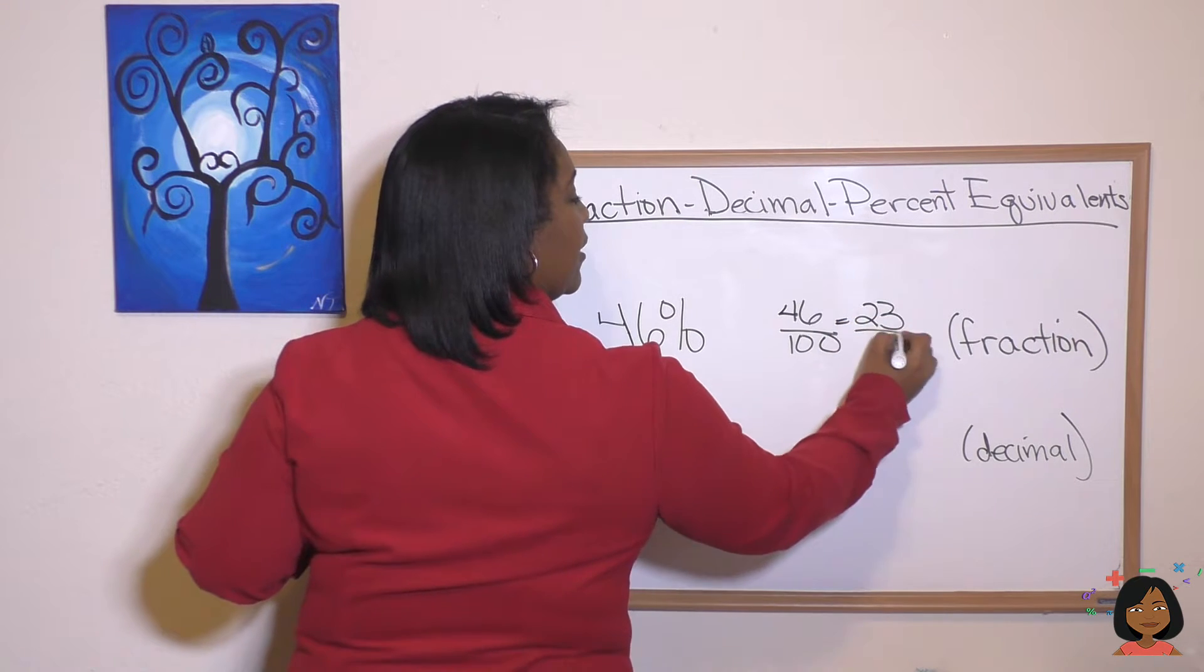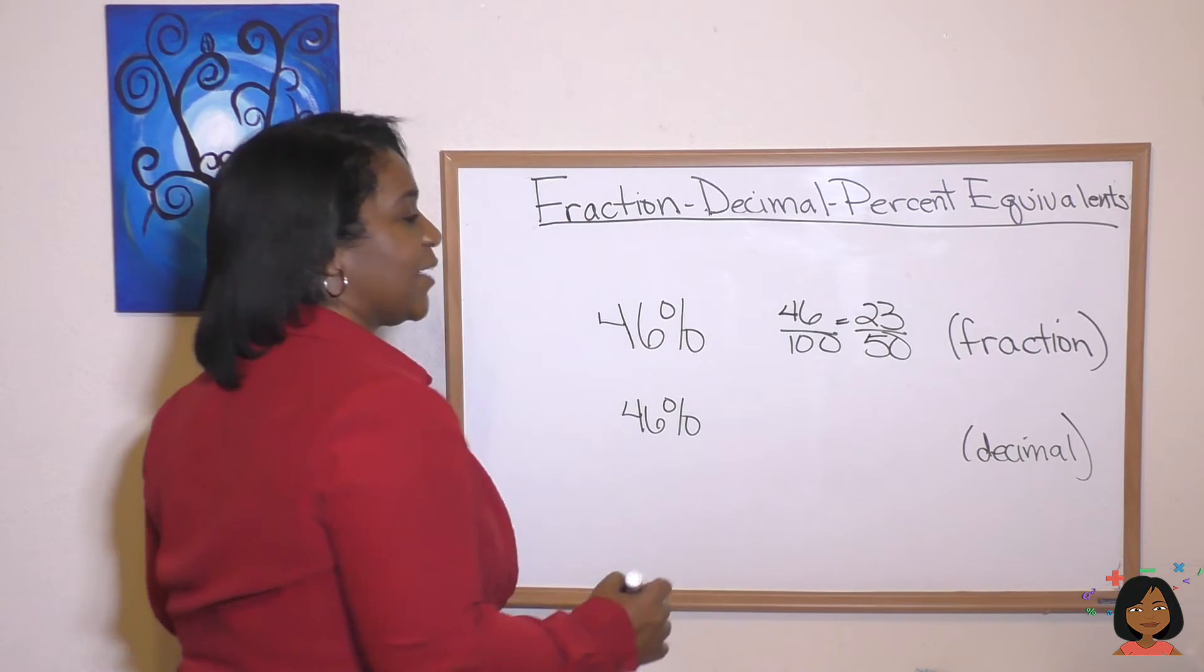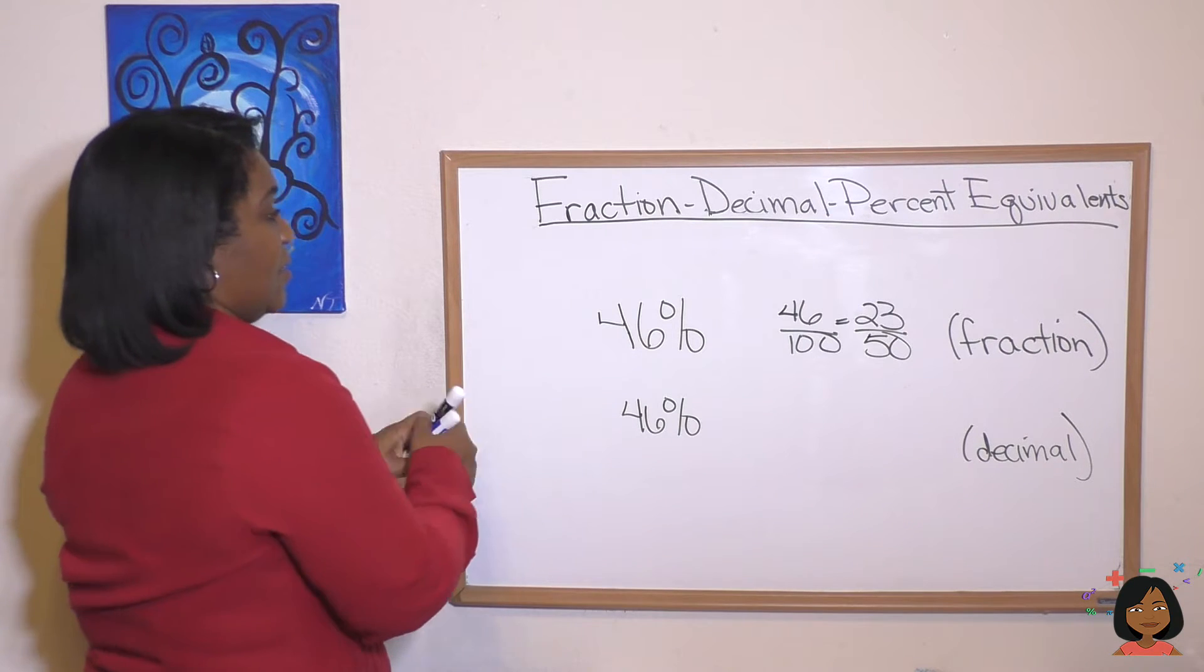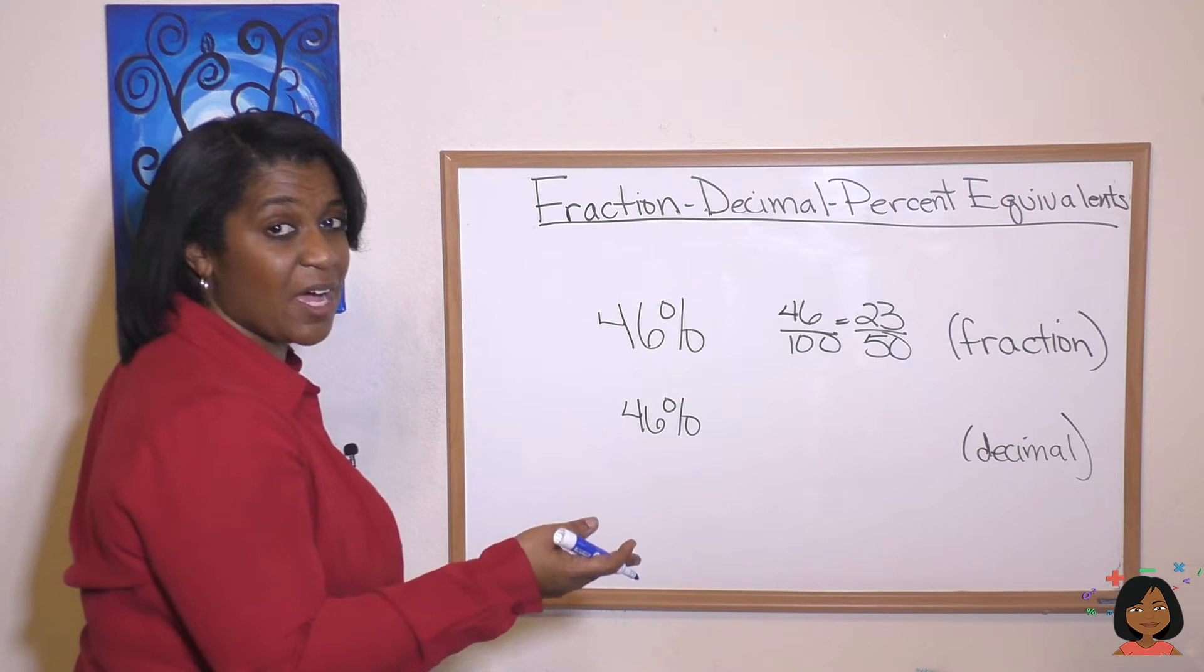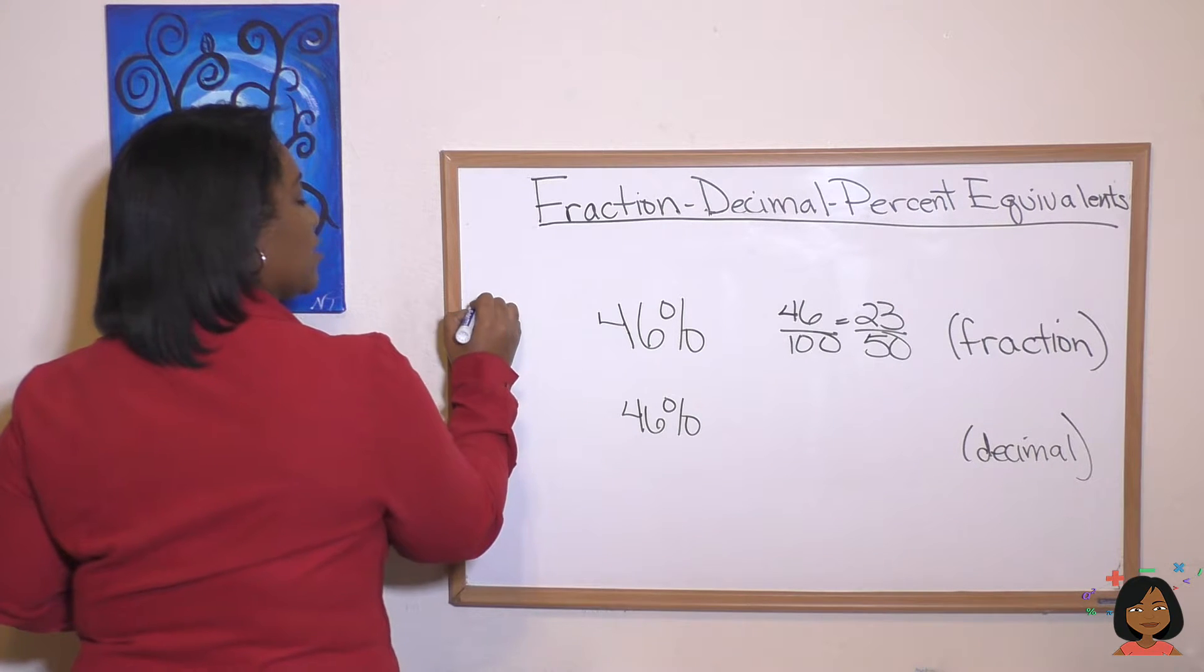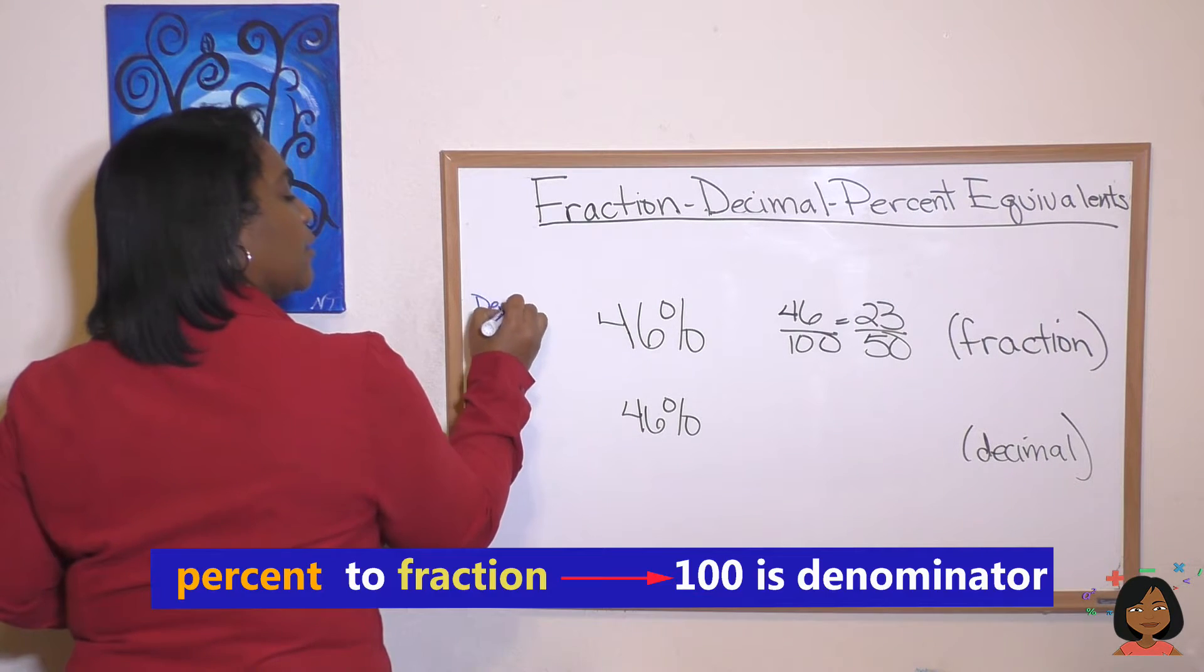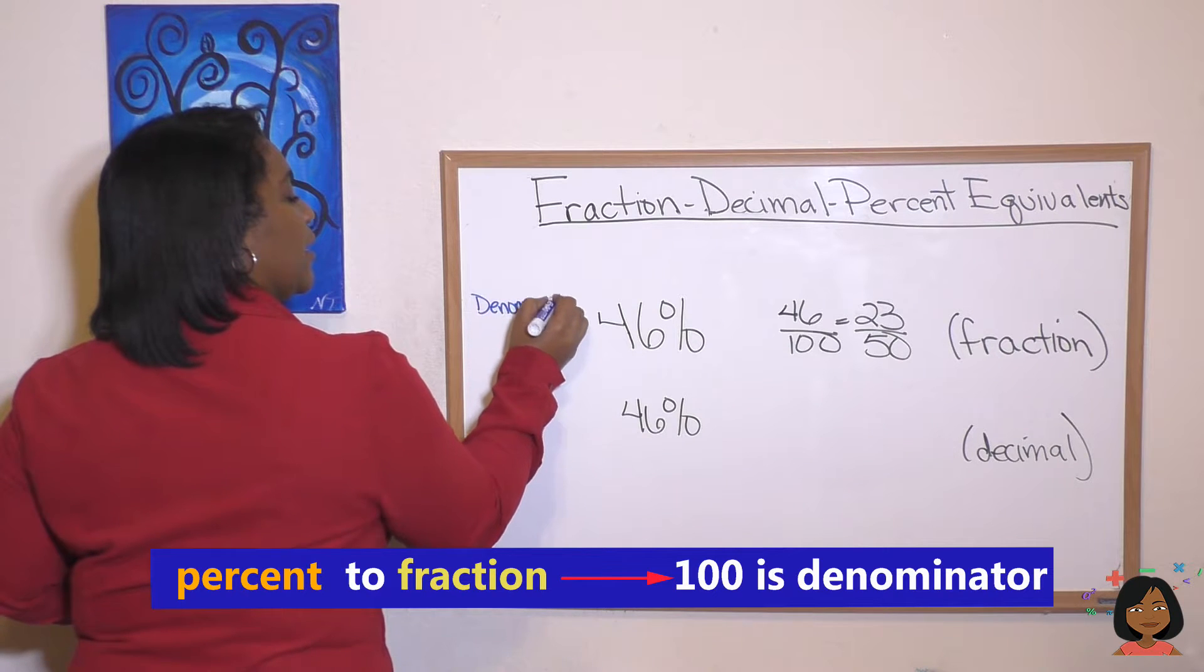23 out of 50. Okay? So the rule there is I can say divide by 100 or put it over 100. So denominator is 100.